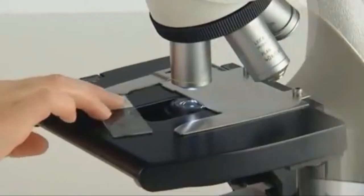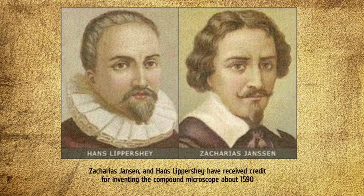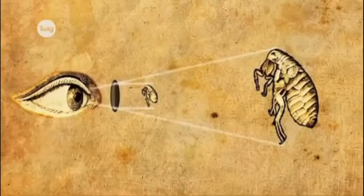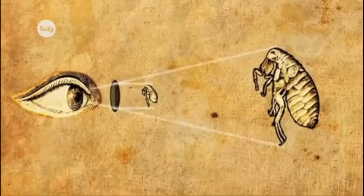Let's look at where it all began. Three Dutch spectacle makers - Hans Janssen, his son Zacharias Janssen, and Hans Lippershey - have received credit for inventing the compound microscope about 1590. The first portrayal of a microscope was drawn about 1631 in the Netherlands. It was clearly of a compound microscope with an eyepiece and an objective lens.